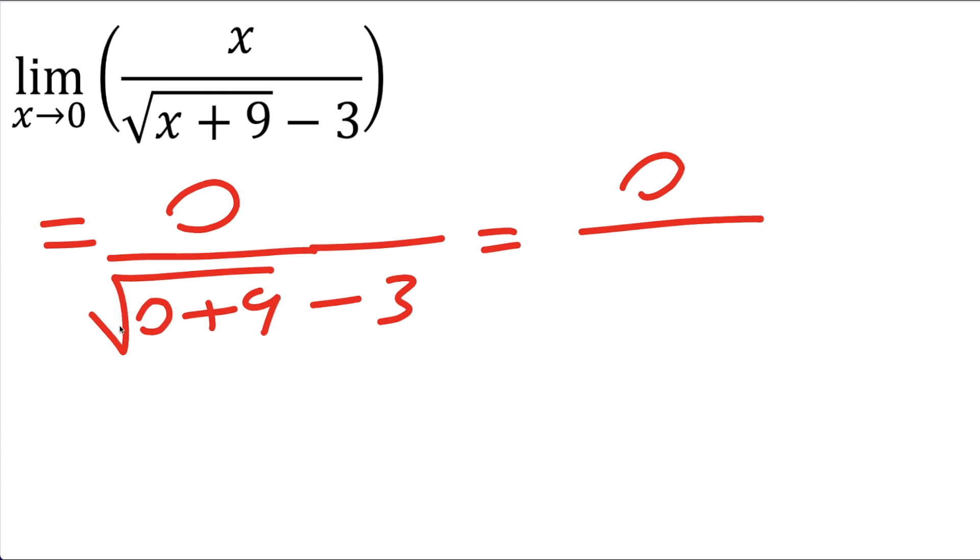So we get 0 divided by the square root of 0 plus 9 is the square root of 9 and the square root of 9 is 3 so we get 3 minus 3 which is 0. So we get 0 divided by 0 and this is a big red flag.